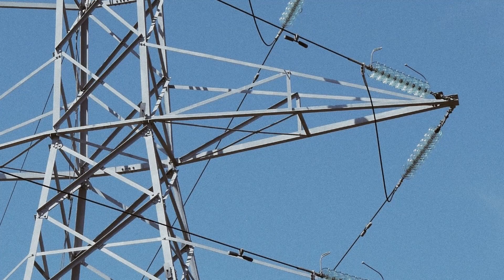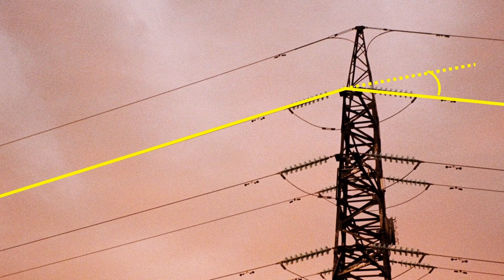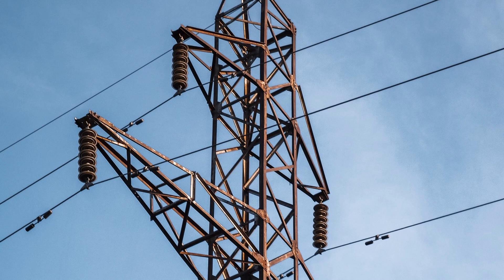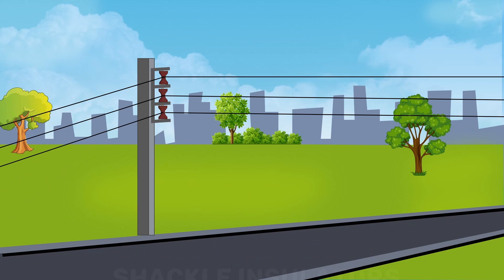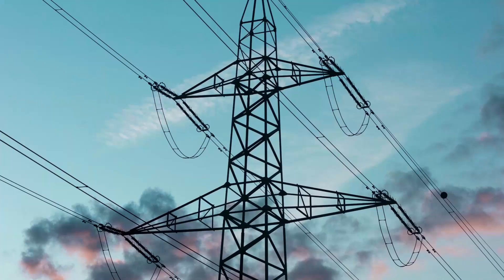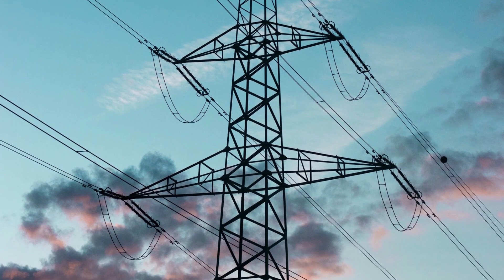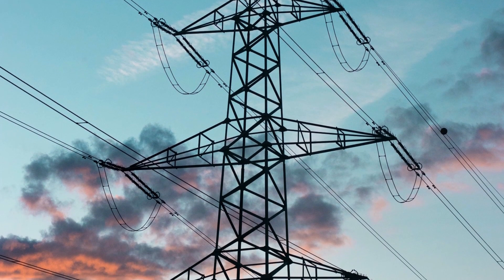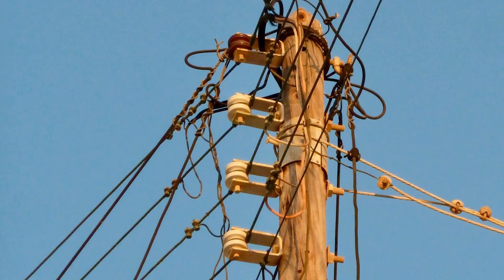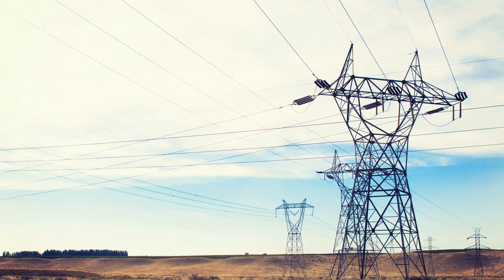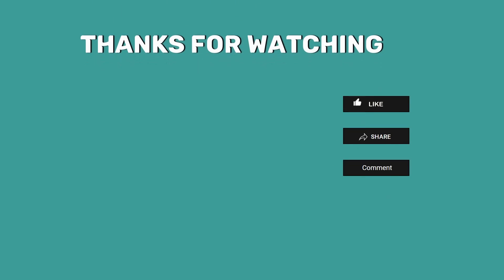Whenever the transmission line changes direction, we cannot use the suspension insulator. In such cases, either strain or shackle insulators are used. For high voltage lines, strain insulators are used, and for low voltage, shackle insulators are used. The discs of the strain insulators are arranged in a vertical plane. That's all for today. See you in my next video.